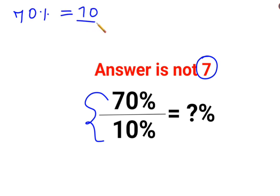70% can be written in terms of a fraction which is 70 upon 100. So 70 upon 100 divided by 10%, which is 10 upon 100.